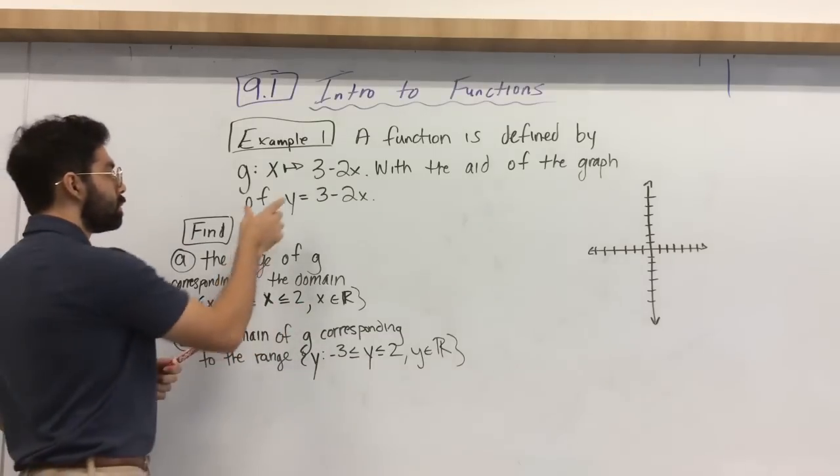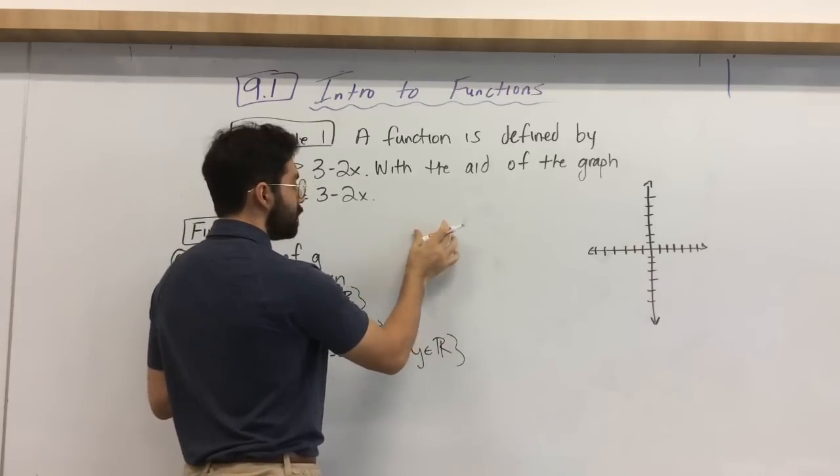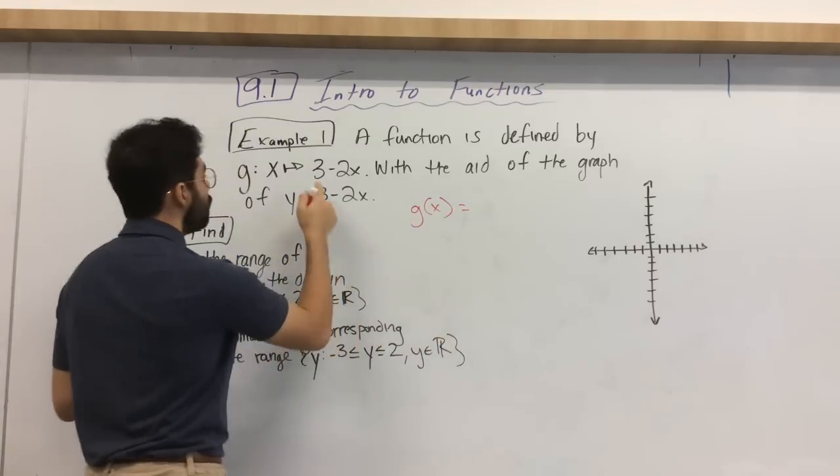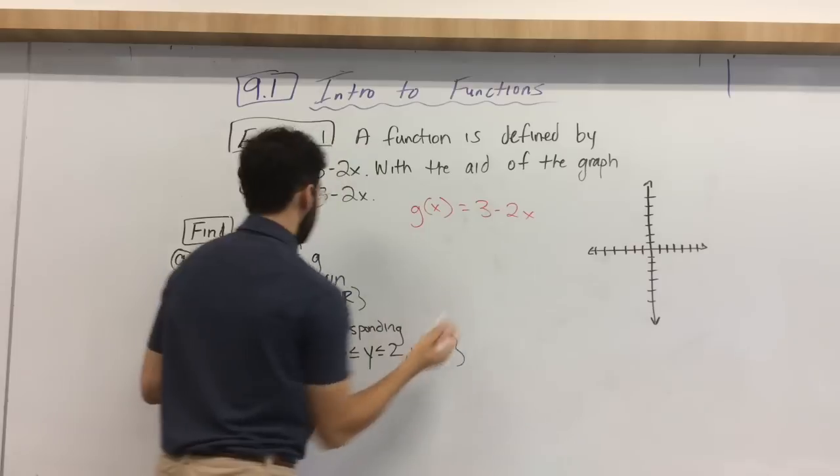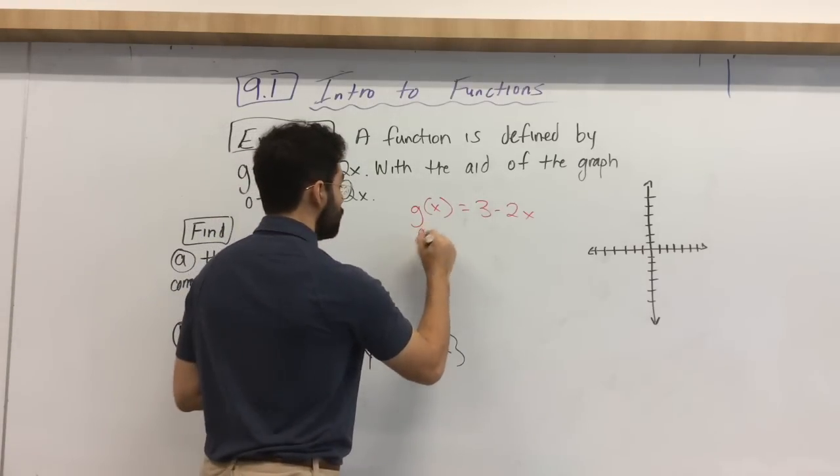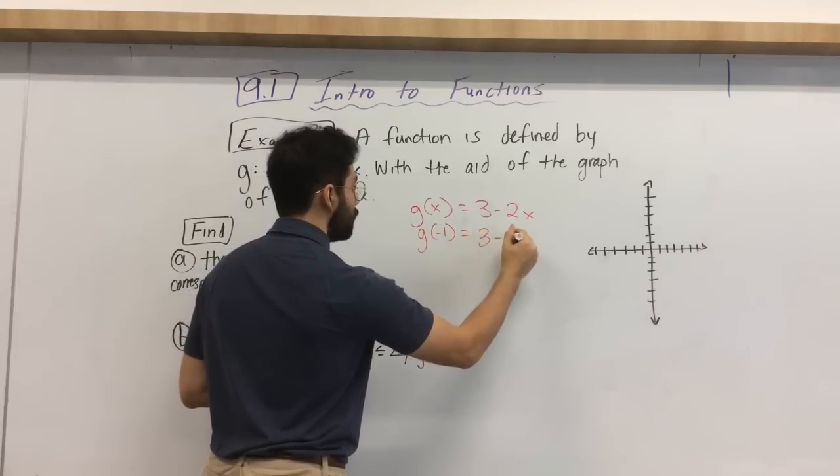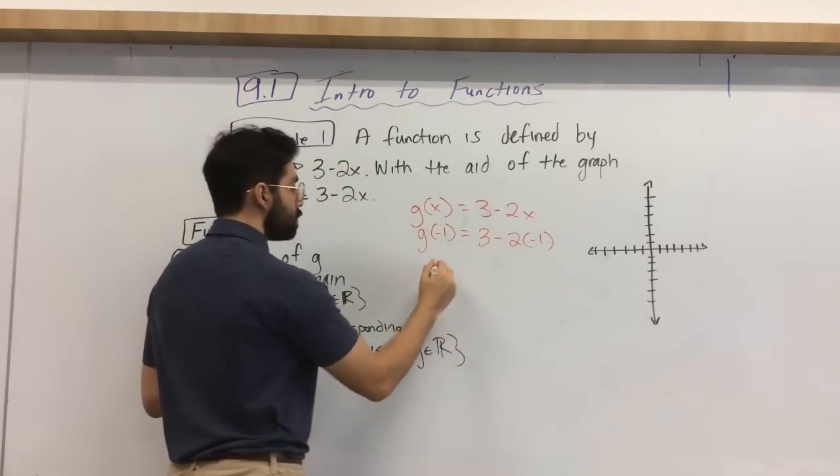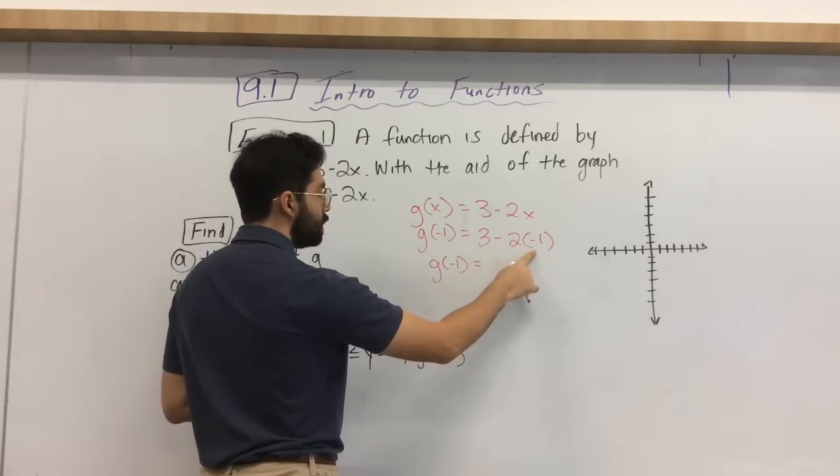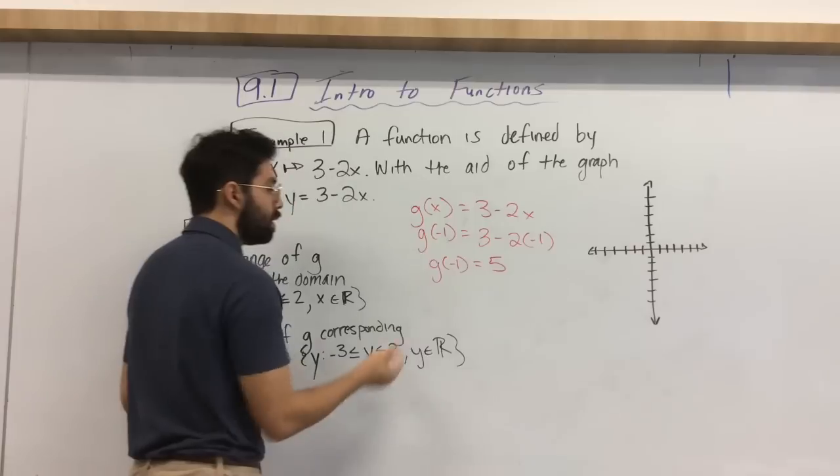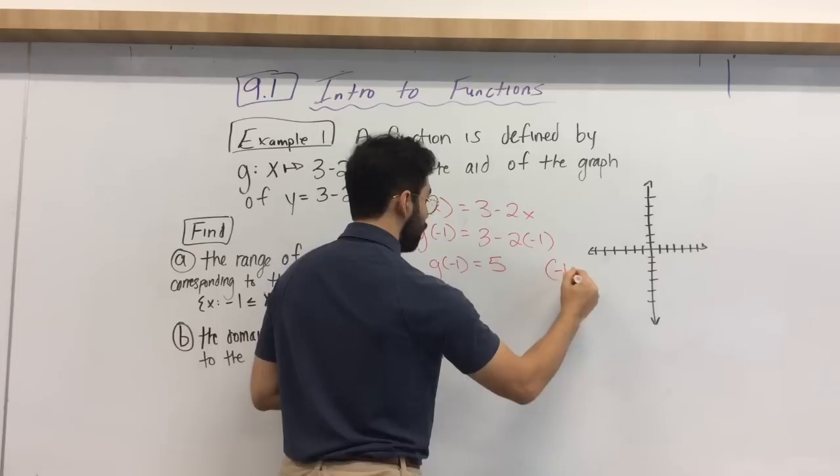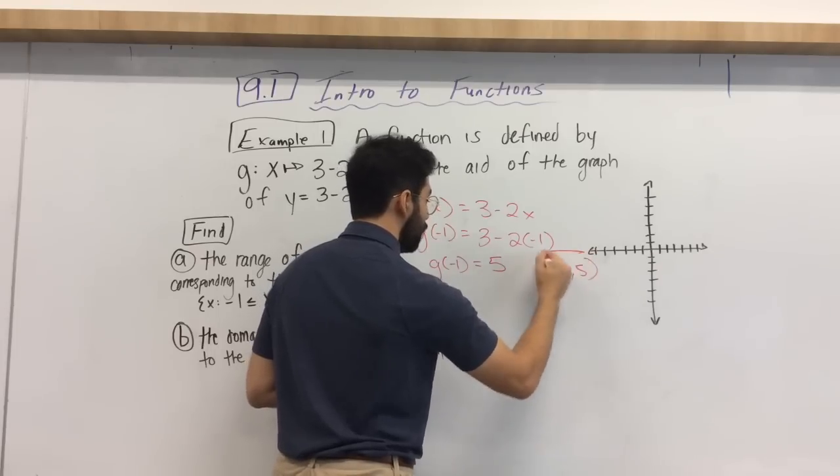Again, the range of g corresponding to the domain. Here's our domain. We need to find the range of what our inputs are. So it's between negative 1 and 2. So remember, we need to go ahead and put our inputs first to find out what our outputs are graphically. So we have g of x, which is 3 minus 2x. Let's put in our domain, which starts with our endpoint of negative 1. So let's say g of negative 1 is equal to 3 minus 2, input negative 1. So what is g of negative 1? It ends up being negative 2 times negative 1 is positive 2. So this ends up being our input negative 1 as an output of 5. So that would determine that our coordinate is negative 1 and 5.